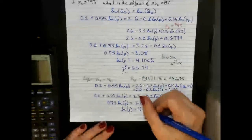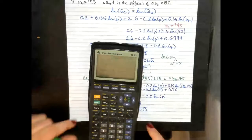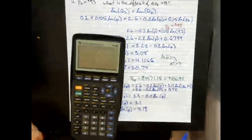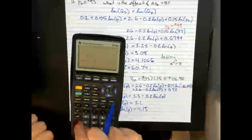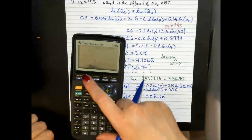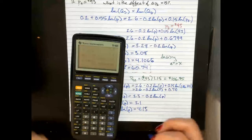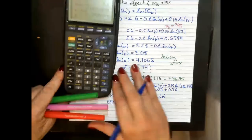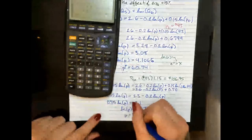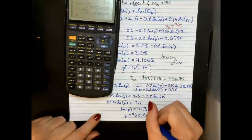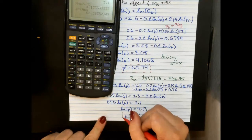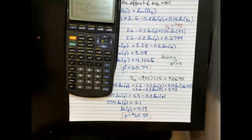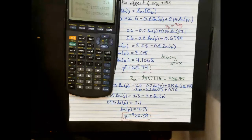It's easier with the graphing calculator. I want to take the inverse of the natural log, which means raising e to that power. I use the e^x function and insert my answer of 4.13 repeating. That gives me a new price of $62.39. That is the new equilibrium price we find when we increase the price of tomato paste by 15%.